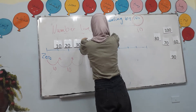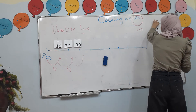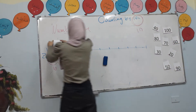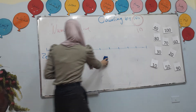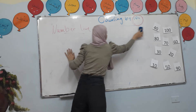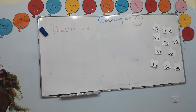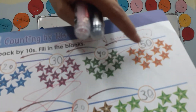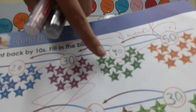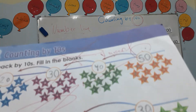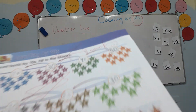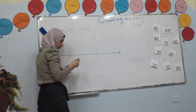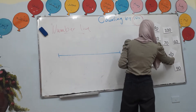Look at the first exercise here on page number 20. They draw stars: 10 blue stars, 10 purple stars, 10 green stars, and 10 orange stars on this number line. And they put for us the number 50 at the end.